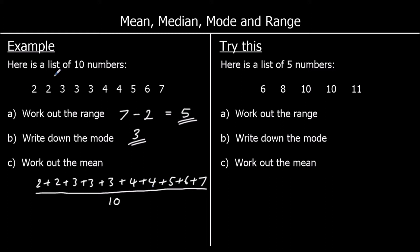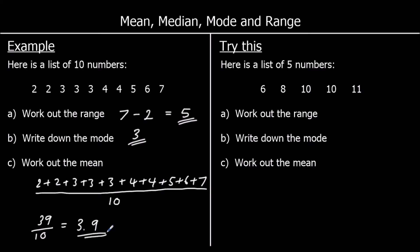Let's add up all these numbers as we go: two, four, seven, ten, thirteen, seventeen, twenty-one, twenty-six, thirty-two, thirty-nine. So thirty-nine divided by ten — we could have used a calculator for that. Thirty-nine divided by ten is three point nine, so the mean is three point nine.